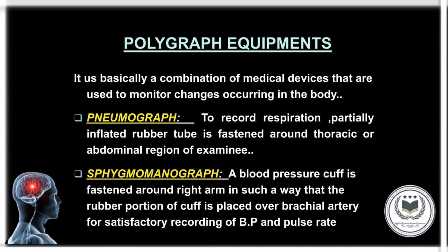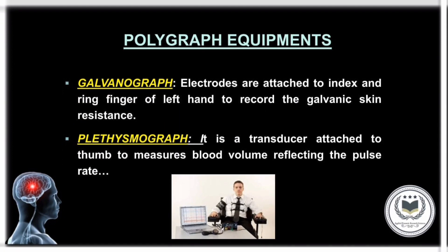Polygraph Equipment: First is the Pneumograph, which is used to record respiration. It is a partially inflated rubber tube fastened around the thoracic or abdominal region of the examinee. Next is the Sphygmomanometer — a cuff fastened around the right arm so that the rubber portion is placed over the brachial artery for satisfactory recording of blood pressure and pulse rate. The third is the Galvanograph, where electrodes are attached to the index and ring finger of the left hand to record galvanic skin resistance. The last is the Plethysmograph, a transducer attached to the thumb that measures blood volume, reflecting pulse rate.